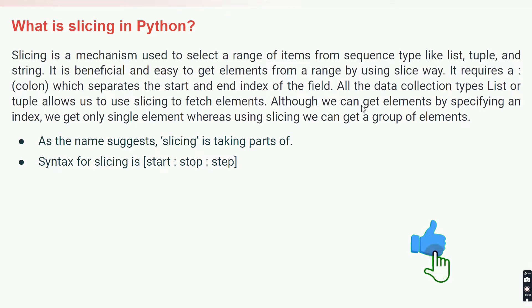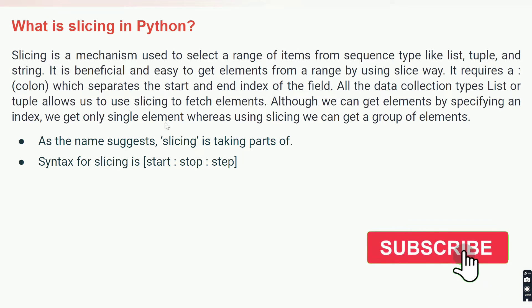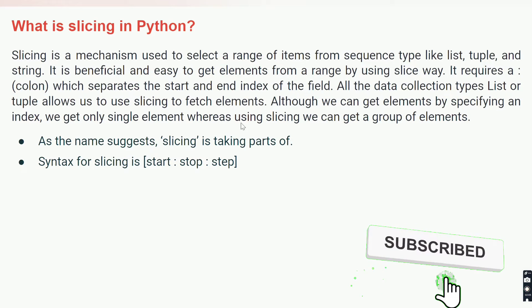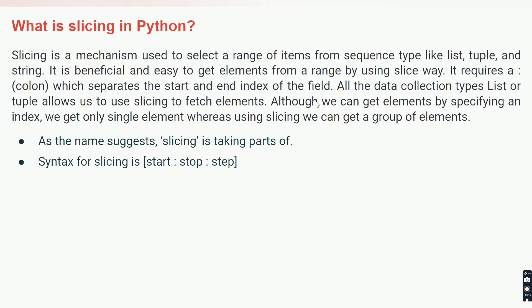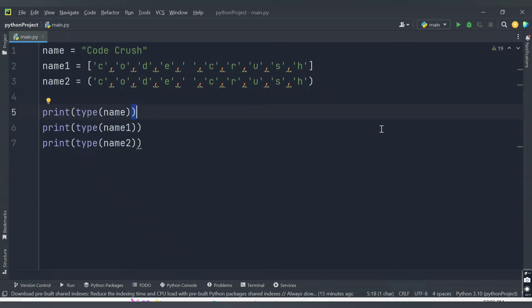Although we can get an element by specifying an index, we get only a single element, whereas using slicing we can get a group of elements. Let's first see this in practice.